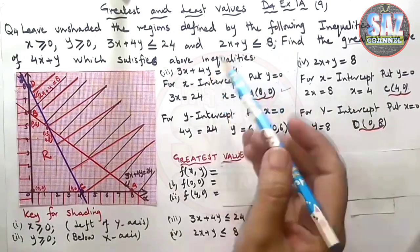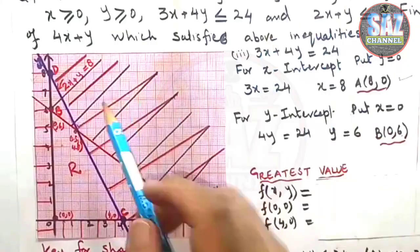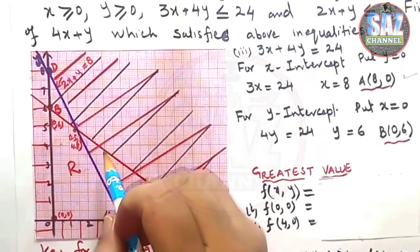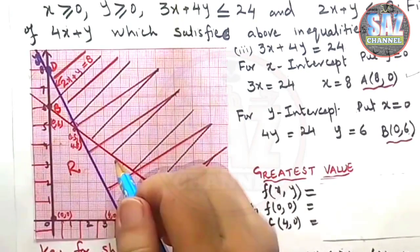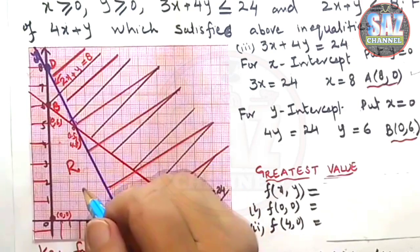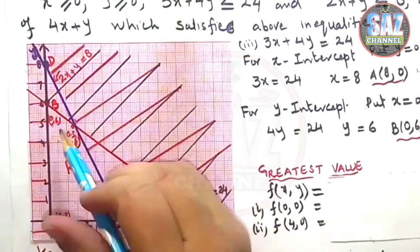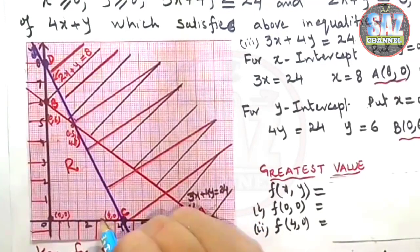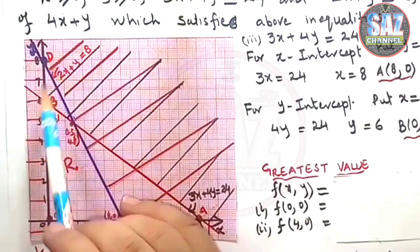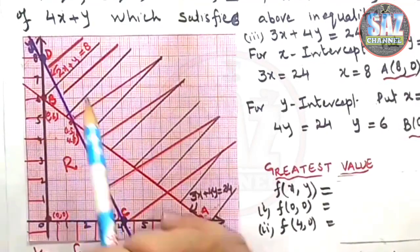Question has two parts. In the first part, we have to plot these all inequalities on the same graph paper and shade according to the direction given. After that we have to obtain the region satisfied by these inequalities and find the corner points or vertices of this region. Those corner points we have to put one by one in the function in order to find the greatest value of this function. Let's move to the plotting of these conditions.